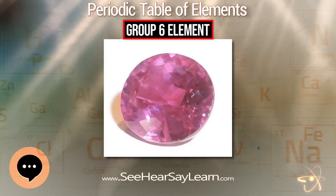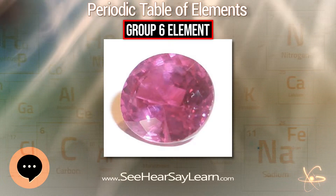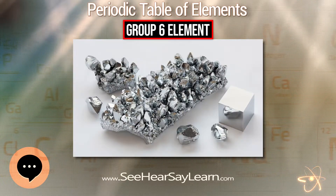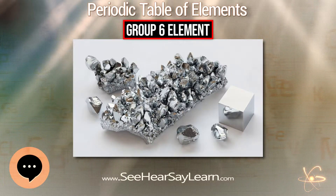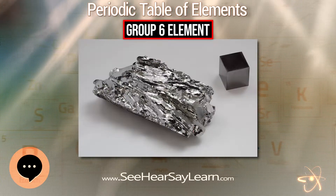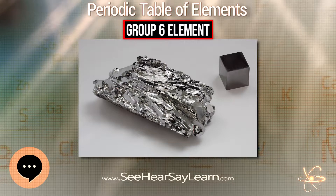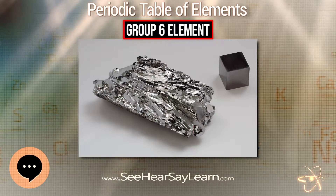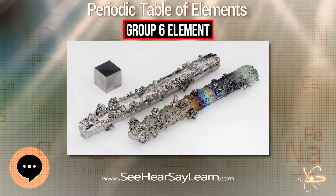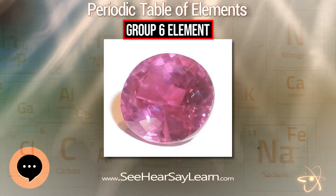Chromium was first reported on July 26th, 1761, when Johann Gottlieb Lehmann found an orange-red mineral in the Berezovskoy mines in the Ural mountains of Russia, which he named Siberian red lead. This was found out in less than 10 years to be a bright yellow pigment, though misidentified as a lead compound with selenium and iron components.